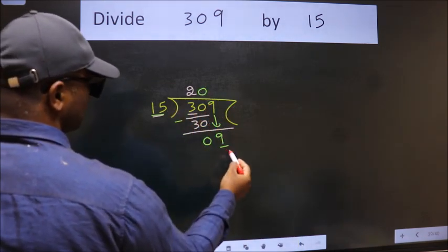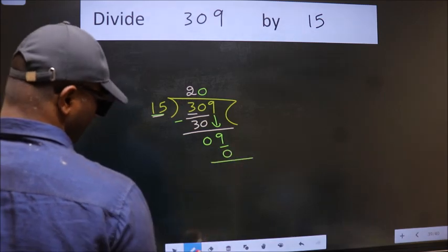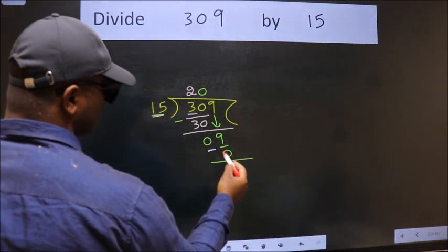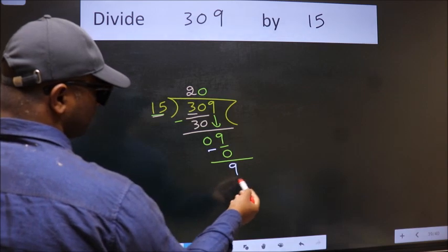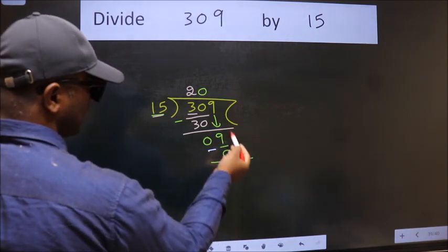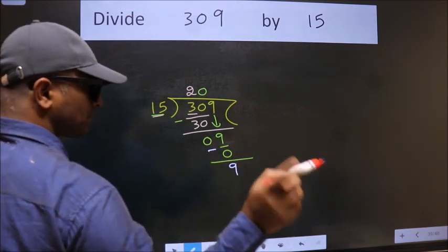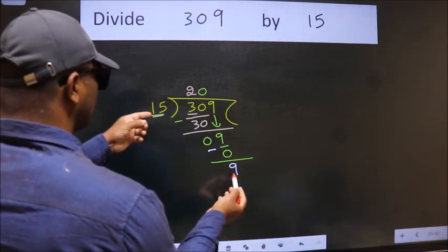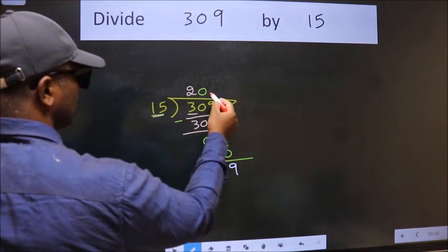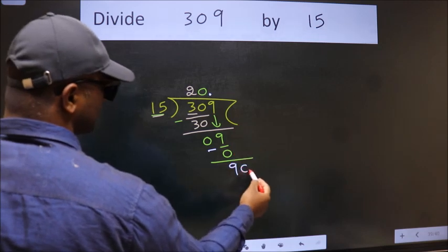So 15 into 0. Now we subtract. We get 9. Over here we did not bring any number down. And 9 is smaller than 15. So now we can put dot and take 0.